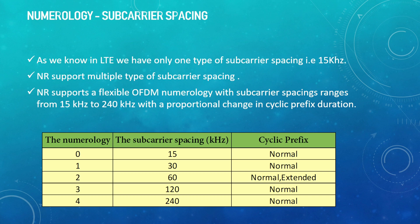We can see in a table: we have numerology 0, 1, 2, 3, 4 and in accordance with that the subcarrier spacing changes — that is 15, 30, 60, 120, 240 — based on the cyclic prefix duration. The subcarrier spacing is basically calculated based on numerology.